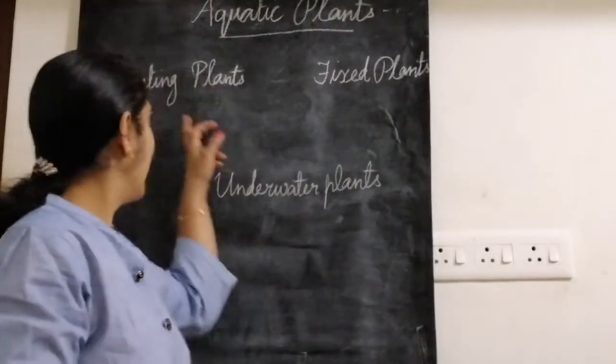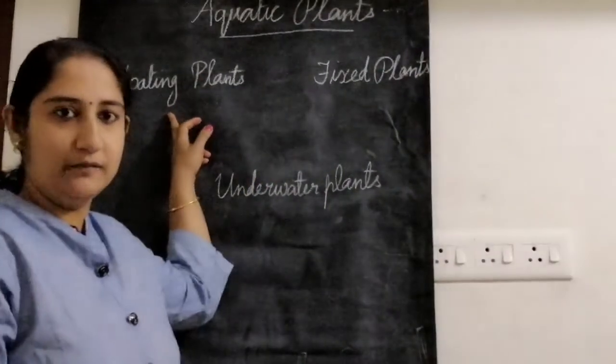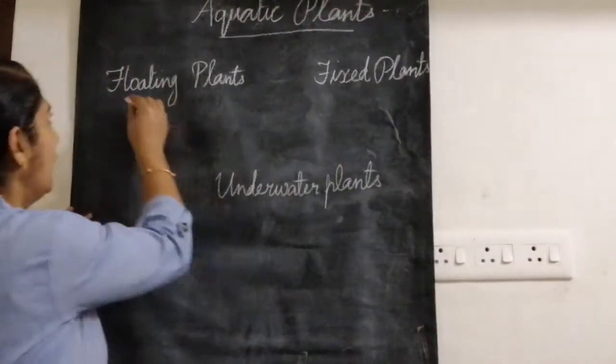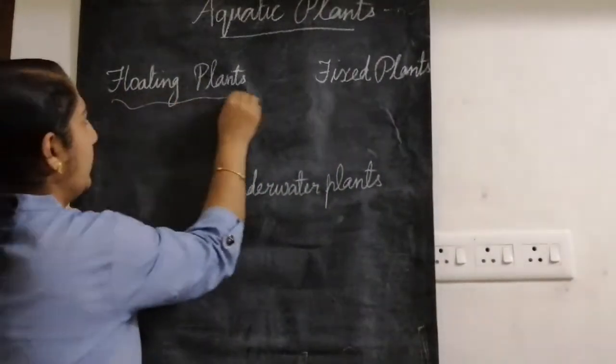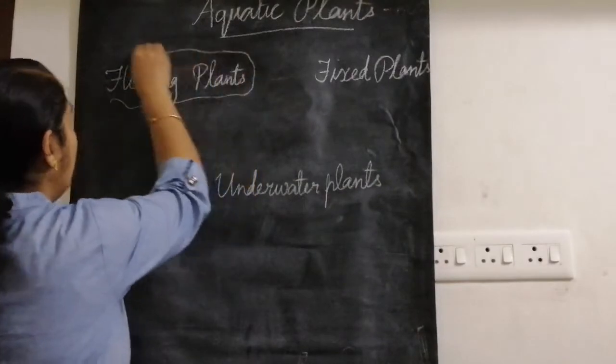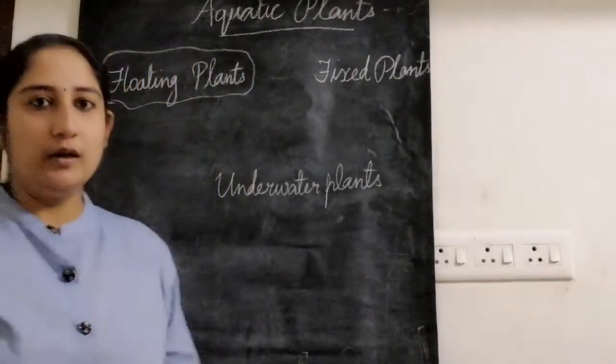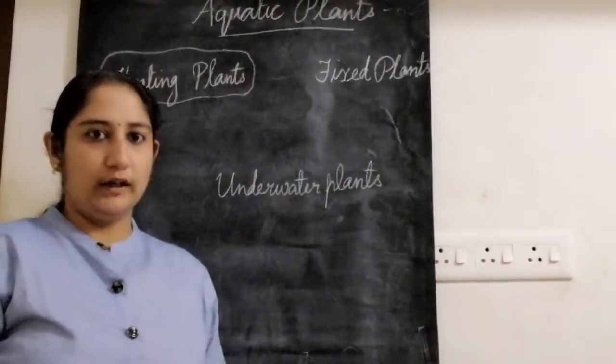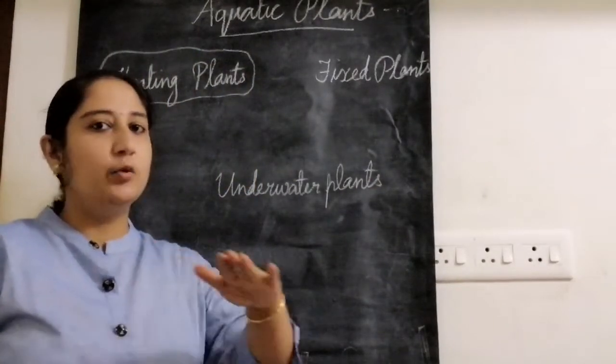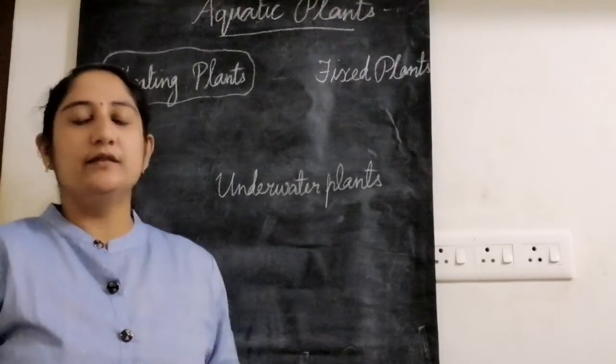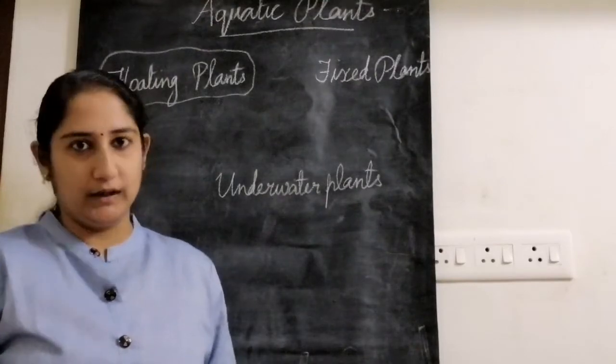Now let's start with the first one, which is called floating plants. You know what floating means — it means moving on the surface of water.